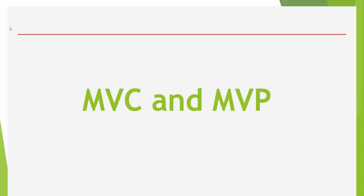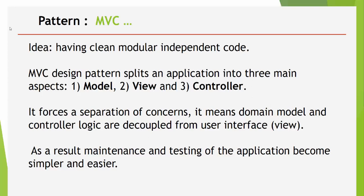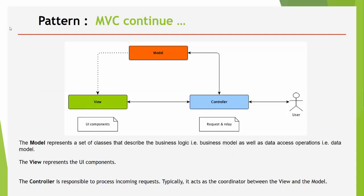So let's start with MVC and MVP. The idea was to have clean, modular, independent code. And MVC design pattern splits the application into three main aspects: Model, View, and Controller. It forces a separation of concerns, meaning the main model and controller logic are decoupled from the user interface View. As a result, maintenance and testing of the application became simpler and easier. So this is a diagram for MVC. Model represents a set of classes that describe the business logic, such as business model as well as data associated with the classes. View represents the UI components, and finally, Controller is responsible for processing incoming requests from the user and typically acts as coordinator between View and Model.